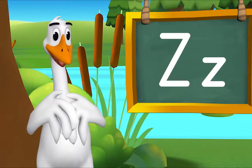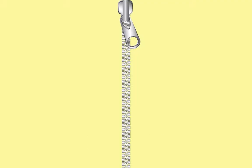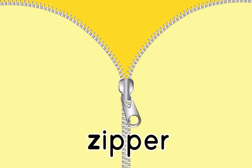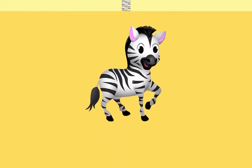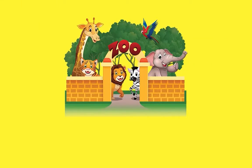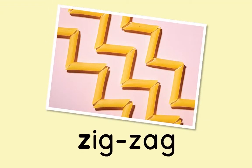Here are more things that begin with Z. Zipper — Z-Z-Zipper. Zebra — Z-Z-Zebra. Zoo — Z-Z-Zoo. Zig-zag — Z-Z-Zig-Zag!